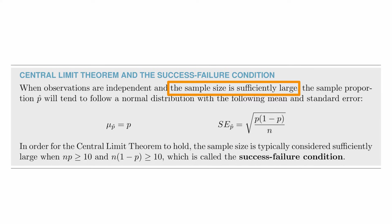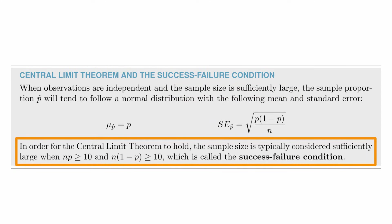You might wonder what 'sufficiently large' means for the sample size condition. Fortunately, there is a guideline. In order for the central limit theorem to hold for a sample proportion, the sample size is typically considered sufficiently large when n × p ≥ 10 and n × (1 − p) ≥ 10. This is called the success-failure condition, and it's what we check to determine whether the sample proportion can be reasonably modeled using the normal distribution.